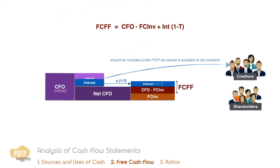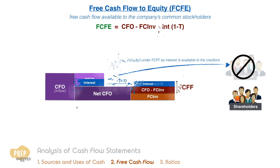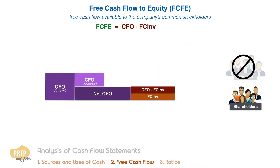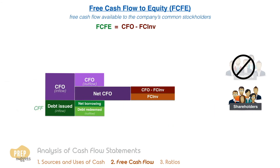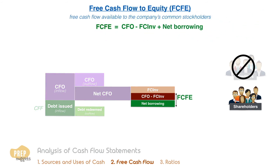The free cash flow to equity, on the other hand, is the free cash flow available to the company's common stockholders. As the interest is only paid to the debt holders, it should not be included in the FCFE computation. What should be included is the net borrowings. The net borrowing is the total debt issued minus the total debt redeemed during the period. As this is a cash inflow from the debt holders and is available to the shareholders, it should be included in the computation of FCFE. As such, the free cash flow to equity is the CFO minus the fixed capital investments plus the net borrowing for the period.